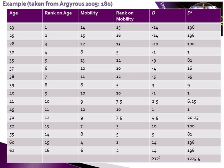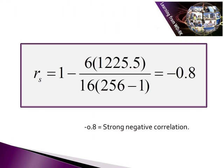You rank on age, then rank on mobility, and then generate your D values — the difference in the ranks given to the two variables for each item of data. Plugging that into the Spearman's rank statistic, the sum of D-squared values ends up being 1225.5. Dividing by the degrees of freedom — which is 16 people multiplied by the square of 16 minus 1, that is 256 minus 1 — generates the Spearman rank test statistic, which is minus 0.8.